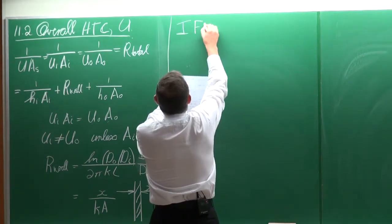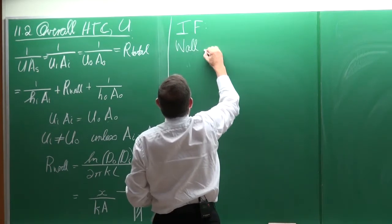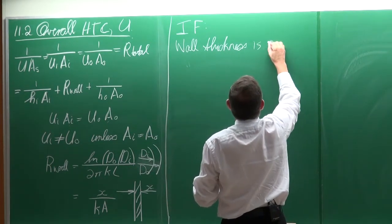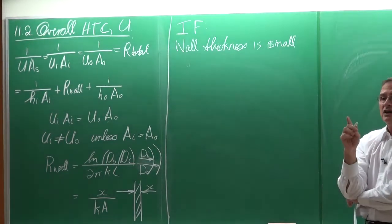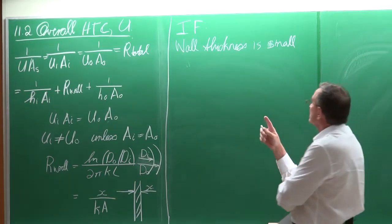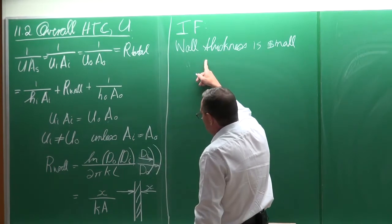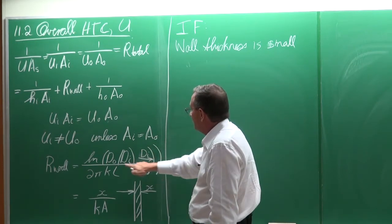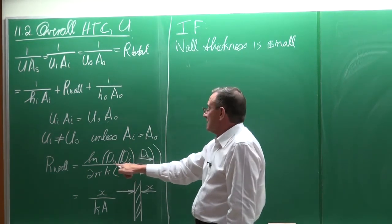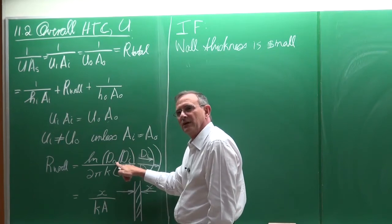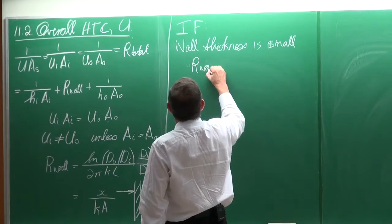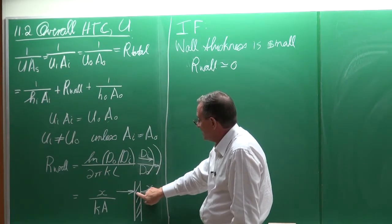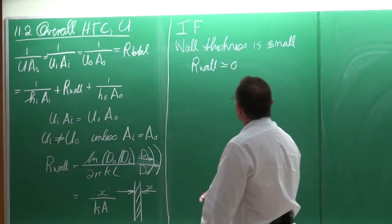Let's suppose we have the case where the wall thickness is small — this is usually the case, but not always. If the wall is thin, then the ratio of the inner to outer diameter will be approximately equal to 1. The natural log of 1 is 0, so the resistance of the wall would normally be equal to 0. The same applies for a flat wall: if the thickness X is very small, the resistance over the wall is also essentially zero.